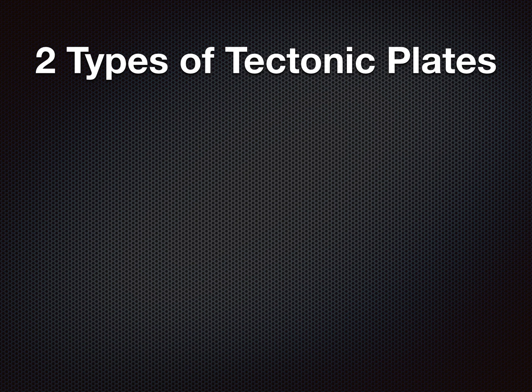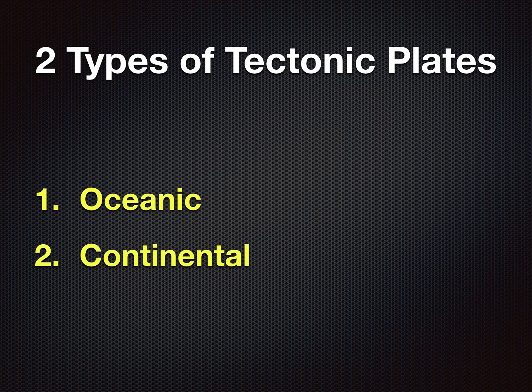Before we go any further, you need to know that there are two types of tectonic plates in the world. First is oceanic. It means what it says — it's in the ocean, meaning underwater. So the plate under the water is oceanic plates. The second is continental. Just like oceanic, it means what it says. It's continental, meaning it's on land or on a continent. Oceanic is far more common than a continental plate — more ocean than land.